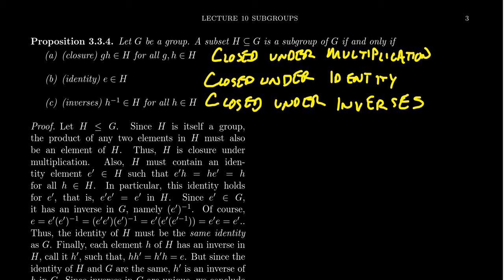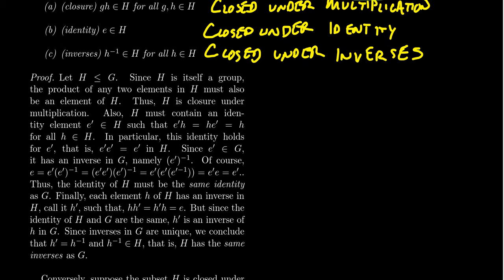I claim this is an if-and-only-if statement: H is a subgroup if and only if it's closed, it has the identity, and it has inverses. Since it's an if-and-only-if statement, this is a proof of two directions. We first assume that H is a subgroup, and because H is a subgroup, that means it is itself a group inside of G using the same operation as G.